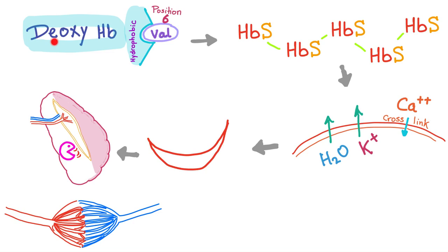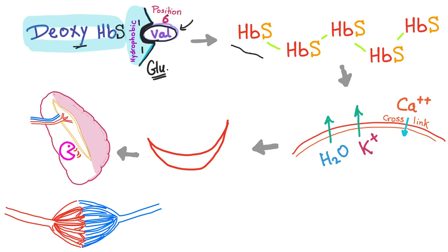Here is our deoxyhemoglobin S. In the deoxy form — without oxygen — it tends to expose its hydrophobic site. We used to have glutamic acid, so there was no problem because glutamic acid is hydrophilic. Now we have valine, and valine is hydrophobic. It incorporates itself into position number 6, which causes the hemoglobin to polymerize.